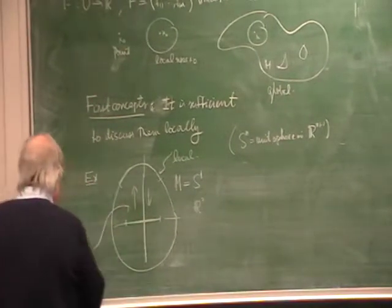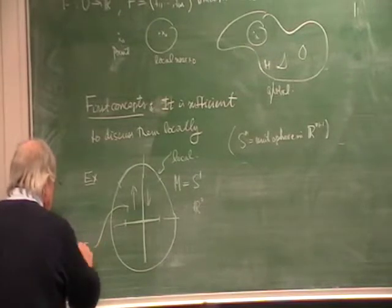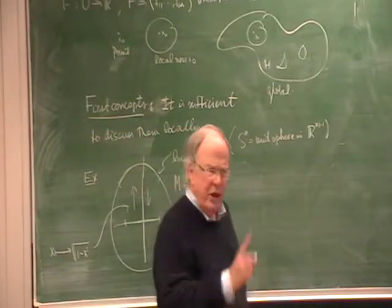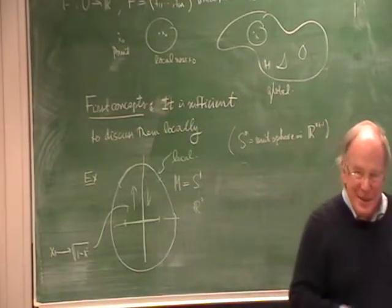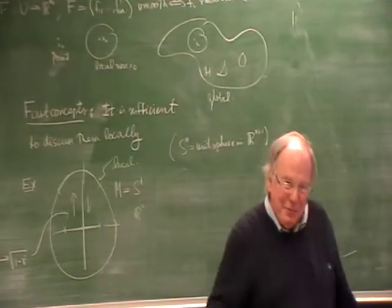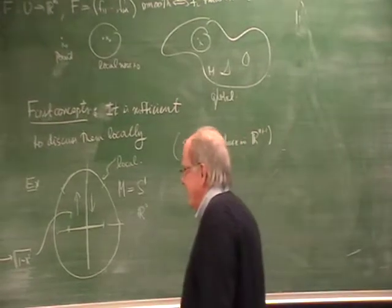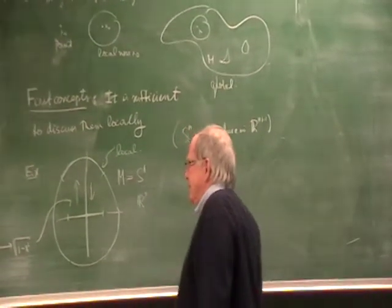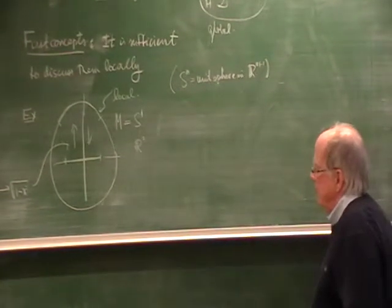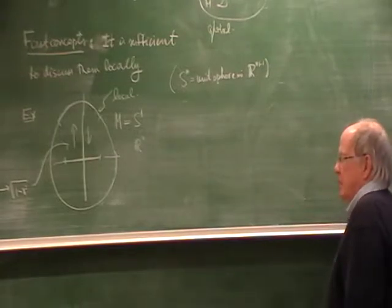The inverse mapping takes x in the usual coordinate to √(1−x²). It's x²+y²=1, so y = √(1−x²). As you know, when you start integrating ratios of things of this type, you get into difficult elliptic integrals. That is the chart.